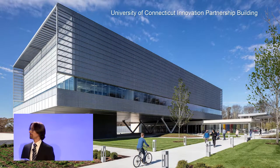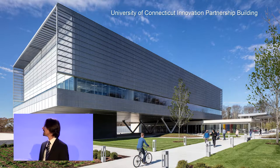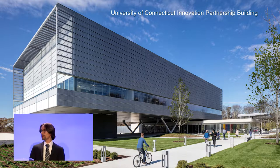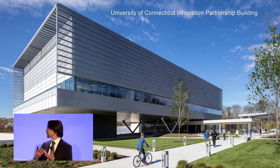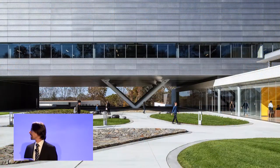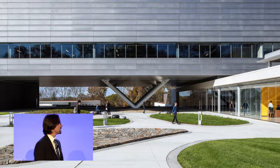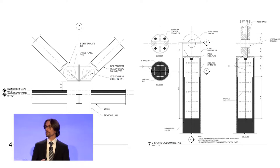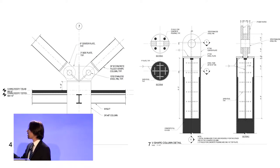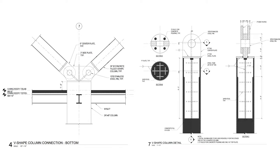Another project on a lesser scale but similar vein: the University of Connecticut Innovation Partnership Building. Here they similarly wanted to support a structure up in the air on V columns. When the designers first looked at this project, they had ideas for how to articulate those connections, but they were getting very complex and costly. They had to concrete-fill the tubular legs of these V columns to address the forces, and the connections were getting very complicated and costly to fabricate.